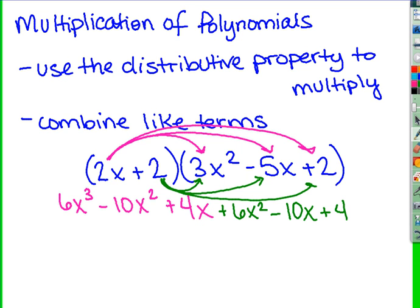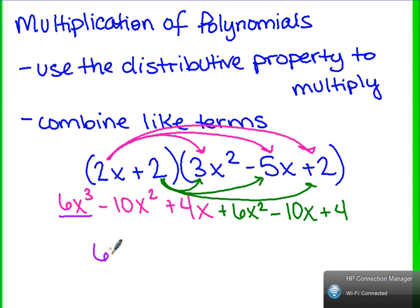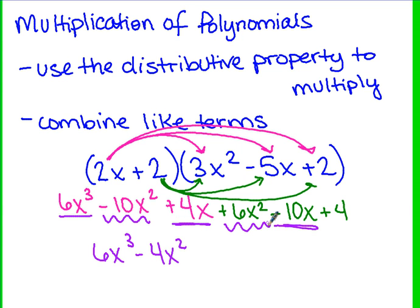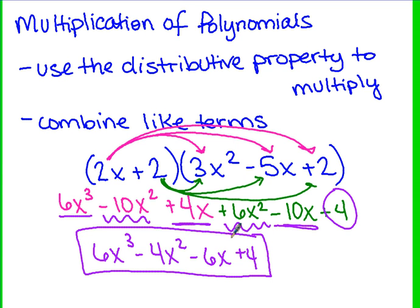Now we combine like terms. When writing answers to multiplication of polynomials, make sure you write in descending order — meaning the biggest exponent value comes first. So our biggest is x³, giving us 6x³. There's nothing else to combine it with. Next, -10x² + 6x² gives -4x². Then 4x - 10x gives -6x, and then +4, which has nothing to combine with. That is multiplication of polynomials.